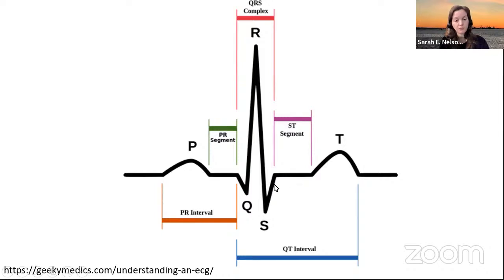The main intervals we're thinking about from a pathologic perspective are the PR interval and the QT interval.